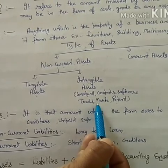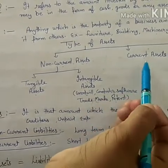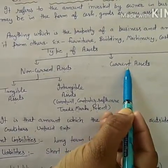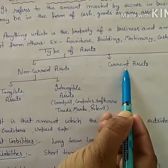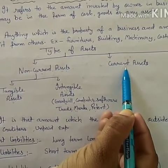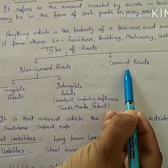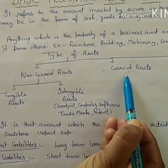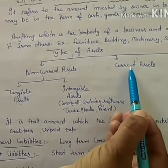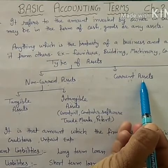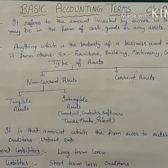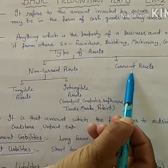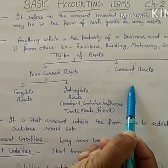Second is Current Assets — those assets which will be used by the firm for only up to one year and can be converted into cash within one year. For example, stock will be sold maximum within one year, so stock is a Current Asset. Bank Balance and Cash are also examples of Current Assets.